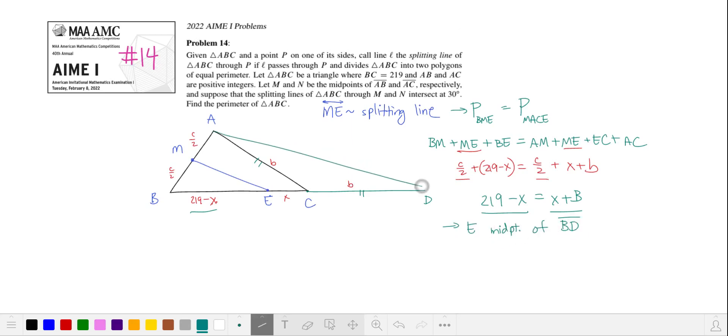If we join A and D, then we see that ME, because it joins the midpoints of two of these sides, acts as the median of triangle ABD. This means ME is parallel to AD.